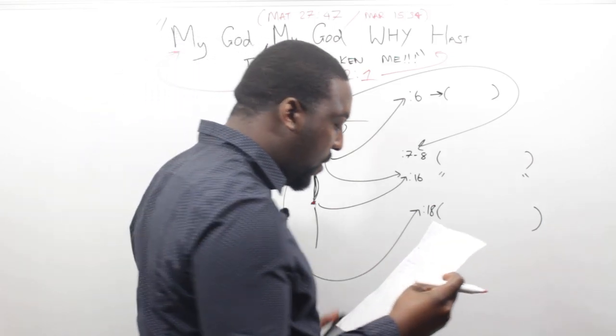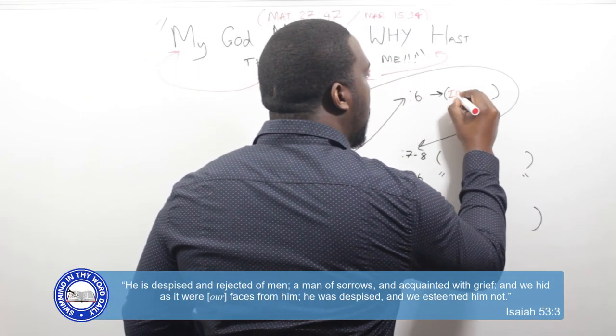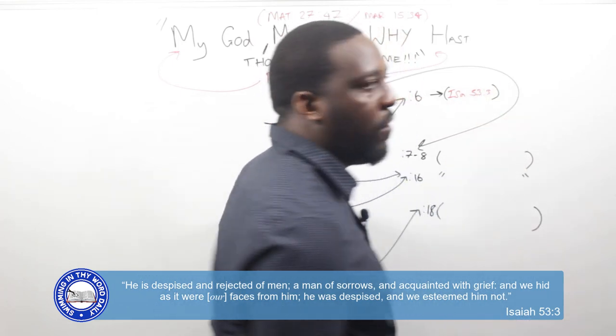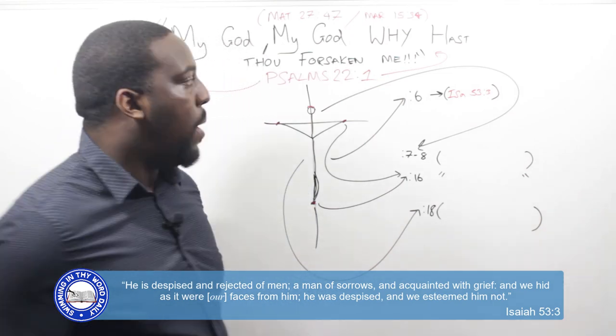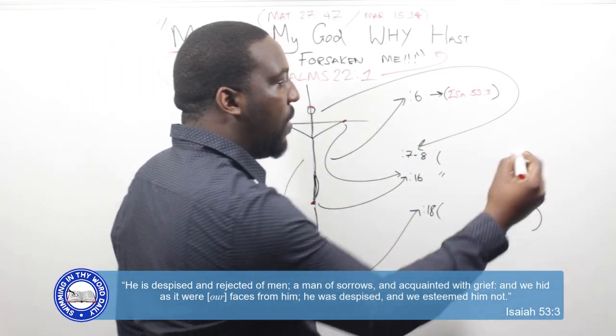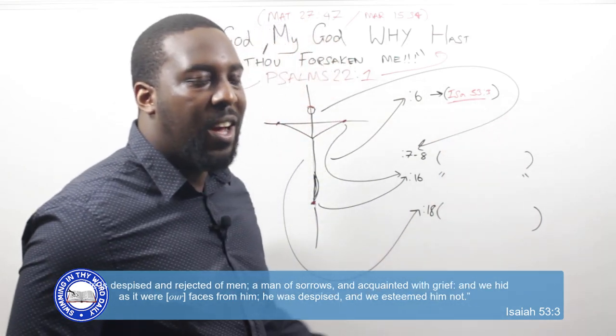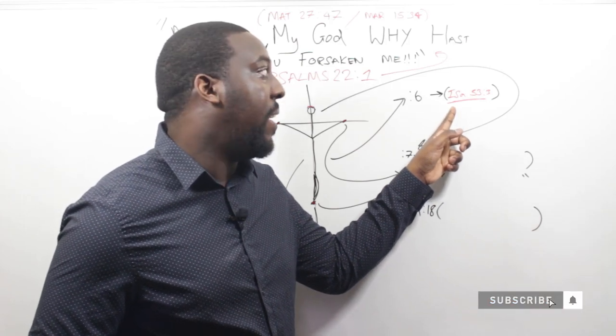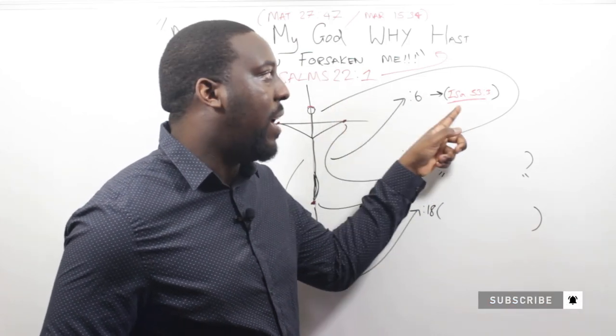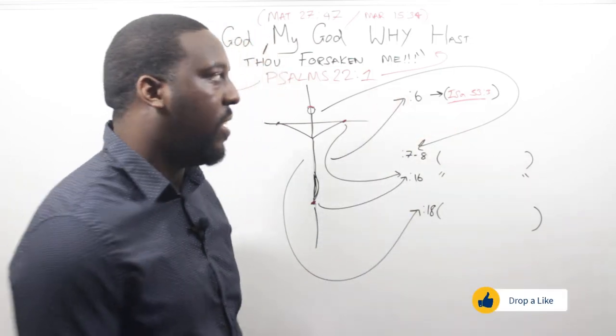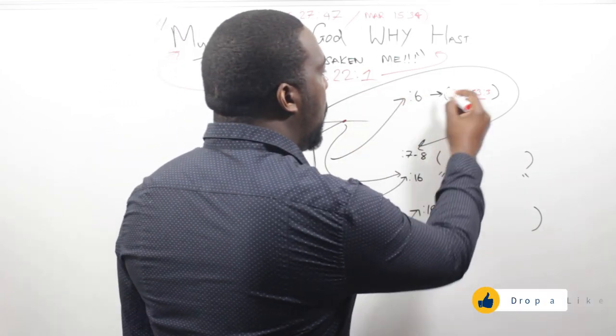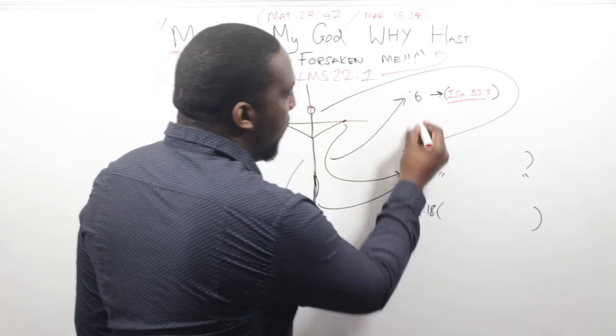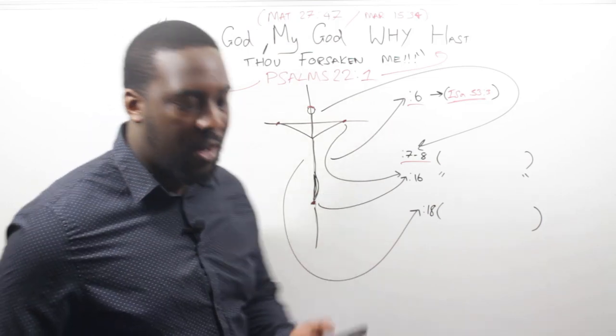And even a cross-reference for that is Isaiah 53, verse 3, which, what we're reading in verse 6 in Psalms 22, is very synonymous with another prophecy about how the Messiah would die. So you put Psalms 22 and Isaiah 53 together, all of this stuff makes sense. Verse 6 in Psalms 22 alludes to Isaiah 53, verse 3, which is very similar.